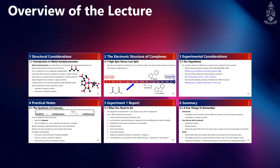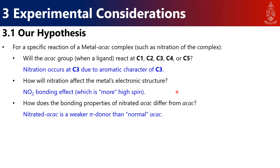Our hypothesis summary: the AC-AC ligand will react at the C3 carbon due to the aromatic character of C3 — remember, it looks like benzene. The NO2 group is electron withdrawing, leading to a weaker field ligand, which means the complex becomes more high spin. In terms of bonding properties, it becomes a weaker pi donor than normal AC-AC. Donor means weaker donor of electron density, because the NO2 is withdrawing electron density.